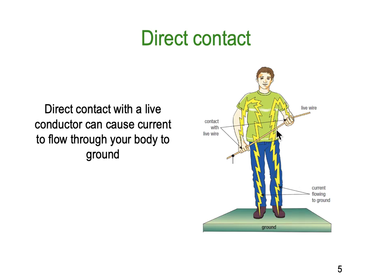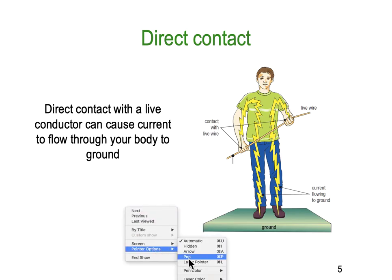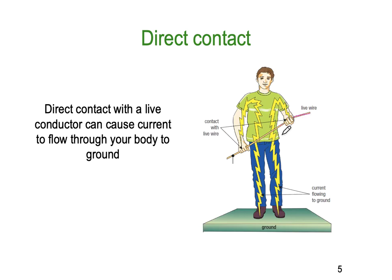With direct contact, you can see a picture of a young fellow who is touching a live conductor. The electrical path goes up his arm, down through his chest, down through his legs, and into the body of Earth. How much current will flow is quite variable — it depends on the resistance of Earth, how good an insulator his boots are, and things like how dry his skin is. Direct contact with a live conductor can cause current to flow through your body to ground, and that can have some devastating effects.